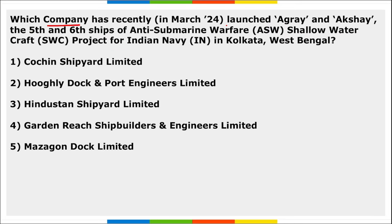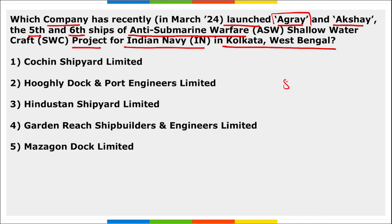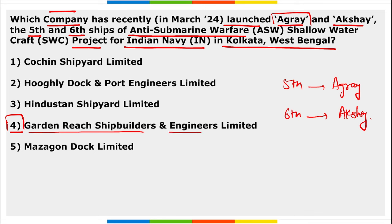Garden Reach Shipbuilders and Engineers Limited (GRSE) recently launched Agray and Akshay — the fifth and sixth ships of the Anti-Submarine Warfare Shallow Water Craft project for the Indian Navy. GRSE is headquartered in Kolkata, West Bengal, where the first underwater metro was also built under the Hooghly River.